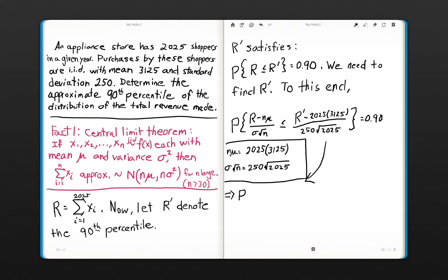This is now distributed as a standard normal random variable, because we have standardized it. We subtract it off its mean and divide it by its standard deviation. So we can call this random variable Z. It's still less than or equal to this quantity here, and it's equal to 0.90.